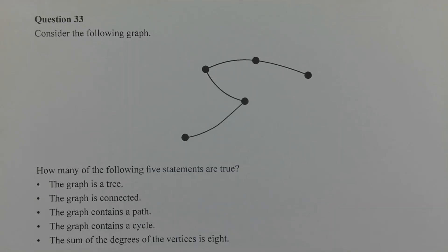Let's consider the five statements one at a time. Now the first statement is the graph is a tree. A tree is a network where there's only one way to go from a vertex to any other vertex. In this diagram there are no cycles and there's only one way to go from any vertex to any other vertex, so the first statement is correct.